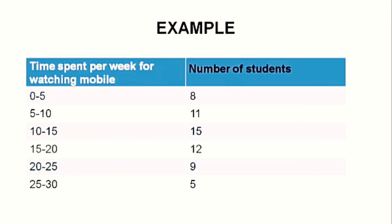The first column consists of class intervals and the second column consists of number of students. Class interval 0–5: 8 students; 5–10: 11 students; 10–15: 15 students; 15–20: 12 students; 20–25: 9 students; and 25–30: 5 students.